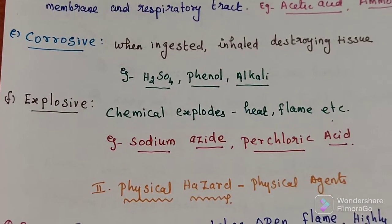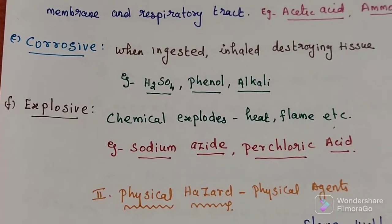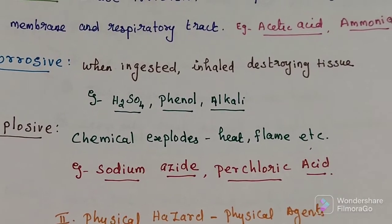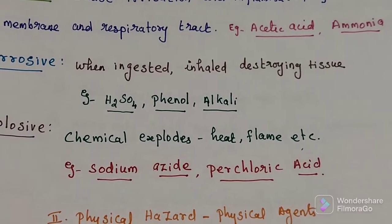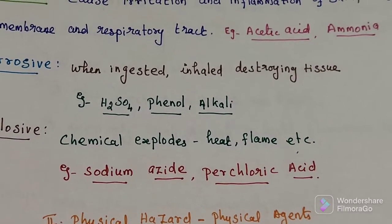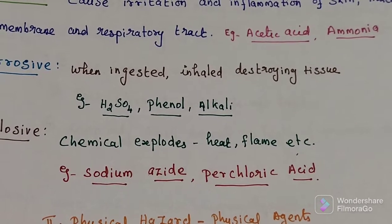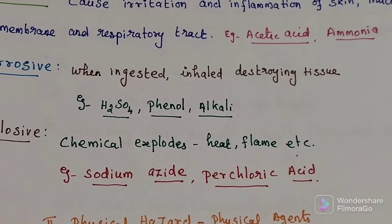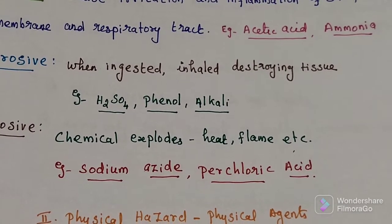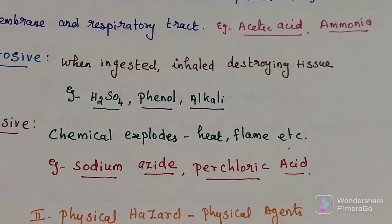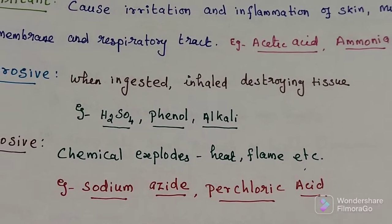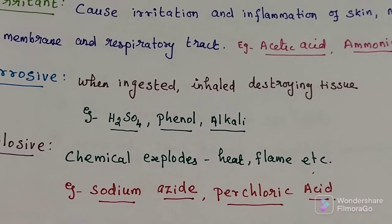The next type is corrosive. This chemical, when it comes into contact with or is inhaled, destroys living tissue. Many acids and alkaline substances are corrosive. Example: H2SO4, phenol, and alkaline compounds.